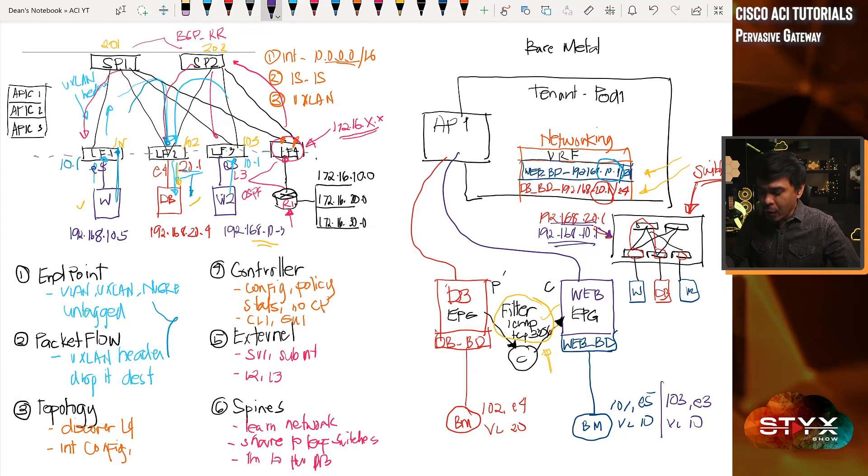So if this web server sends to the default gateway, the 10.1, yes, it exists here. The 10.1 also exists in this leaf. As a matter of fact, the 10.1 exists on the entire switch. But in our discussion or by concept, we call this pervasive SVI.